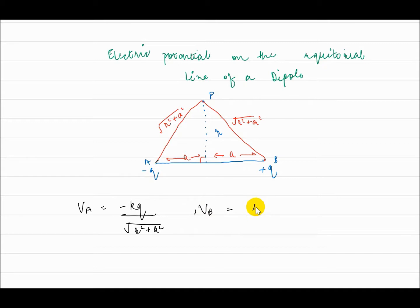it will be equal to kq upon r square plus a square. So, the net electric potential is VA plus VB,